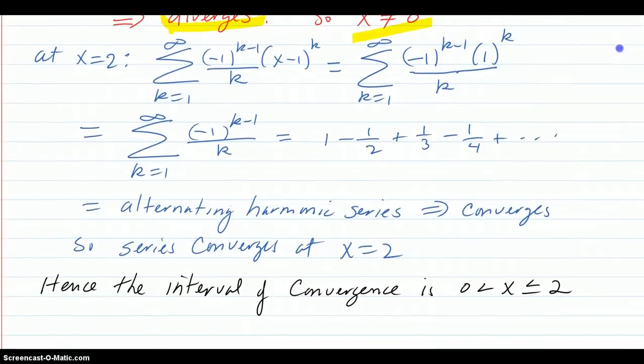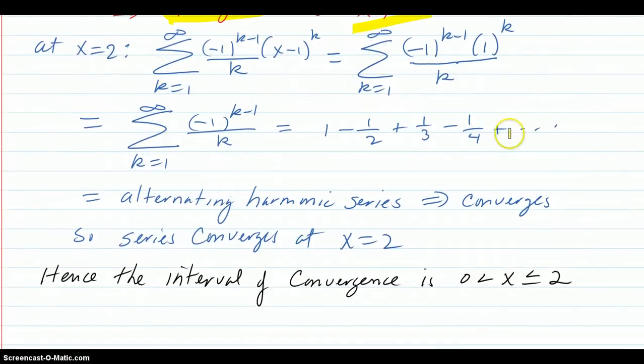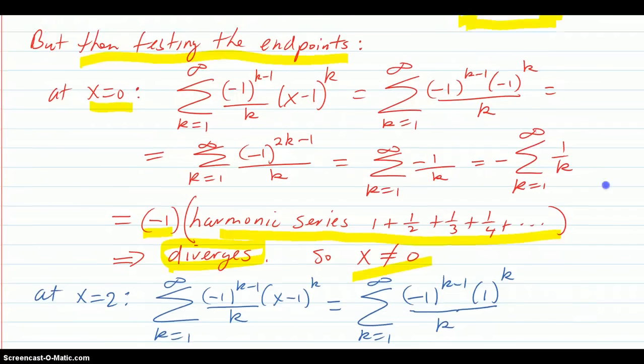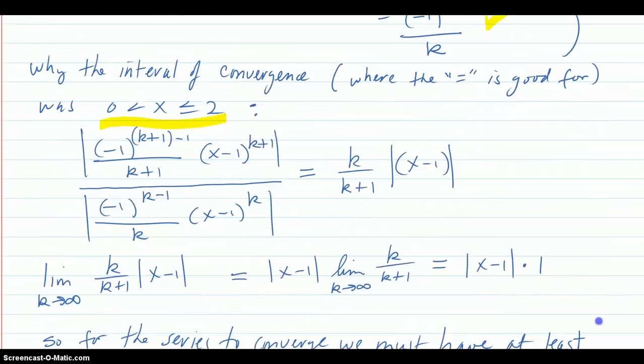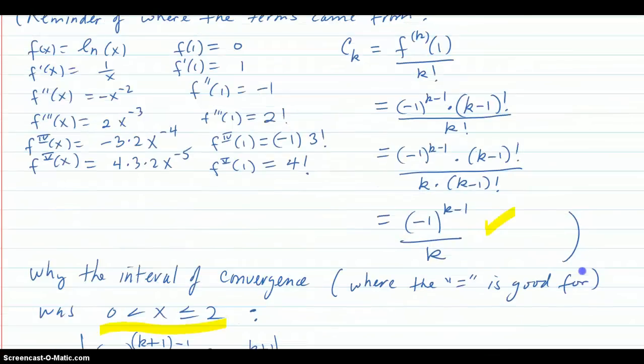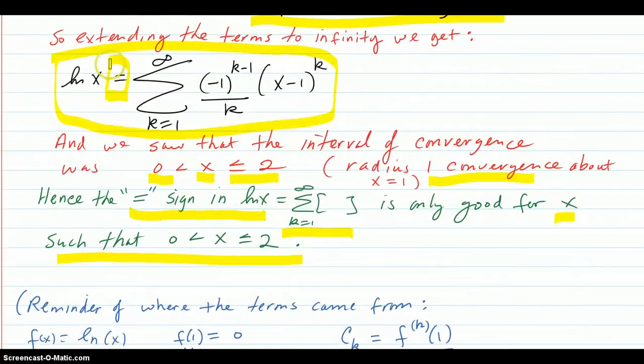And then x equals two. We went through and found out that it's the alternating harmonic series, and that did converge. So x equals two is good. Hence, the interval of convergence was zero less than x less than or equal to two. So that equal sign right up here is only good on that small interval: zero less than x less than or equal to two.